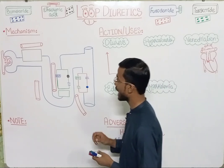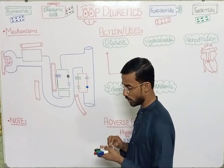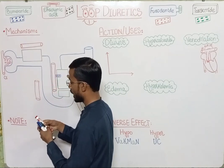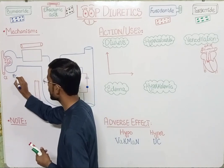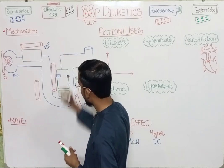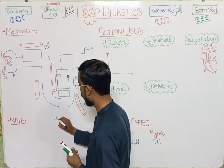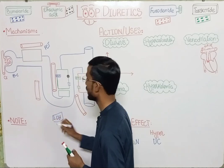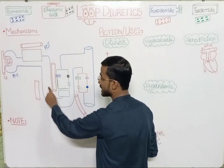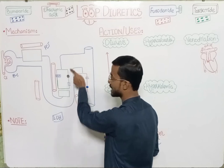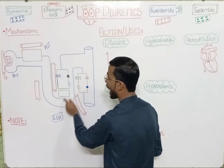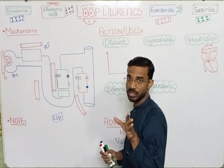Here you can see the basic structure of the nephron. This is the glomerulus, and here is the Bowman's capsule. Here is the proximal convoluted tubule, and this is the loop of Henle. We categorize the loop of Henle into two parts: the descending loop of Henle and the ascending loop of Henle. The descending loop is relatively small in diameter, and the ascending loop is relatively large in diameter.